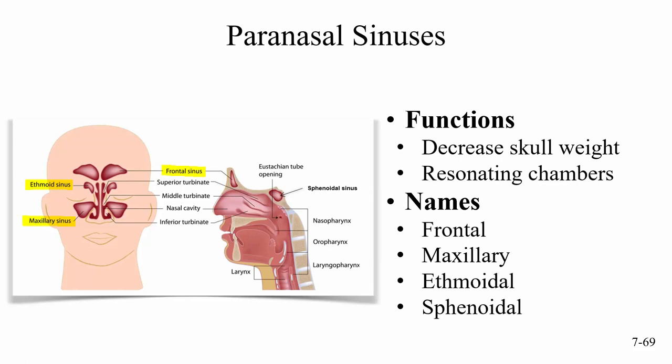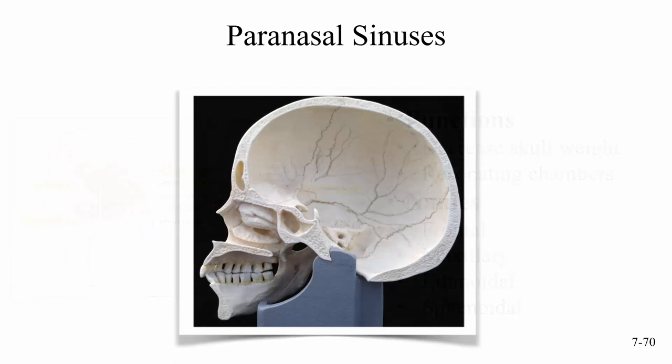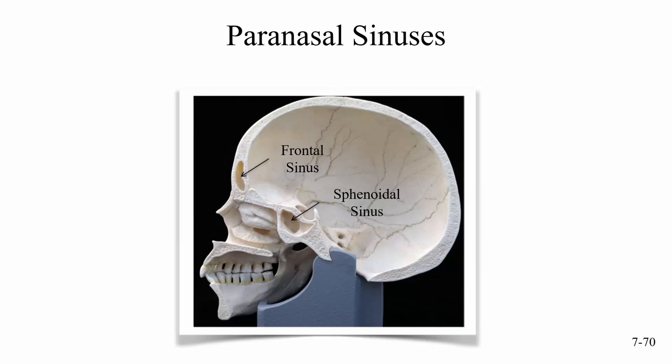If you have a sinus headache and you're squeezing the bridge of your nose, that's where the ethmoid sinuses are. Looking at a mid-sagittal section of the skull, we can see the frontal sinus, and then the sphenoidal sinus. In a skull sectioned mid-sagittally, here's the frontal sinus, here's the sphenoidal sinus. The maxillary and ethmoid sinuses we're not really able to see in this view.